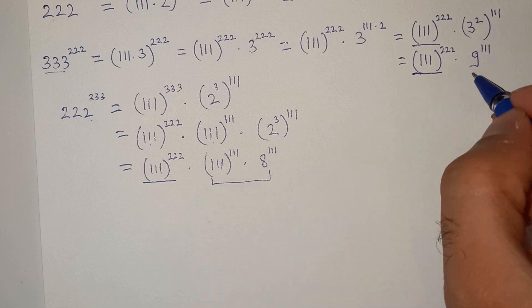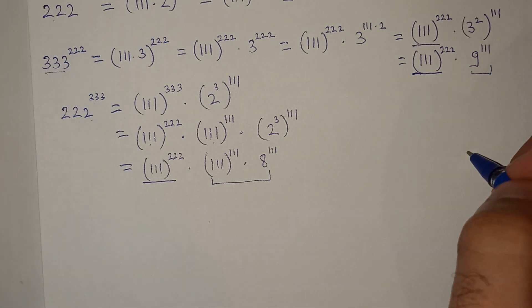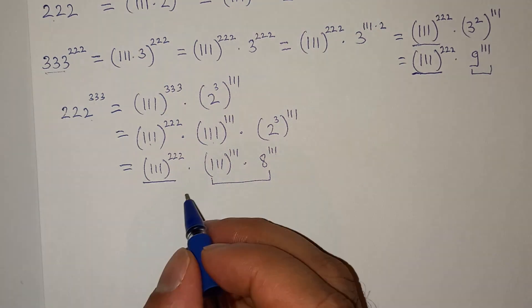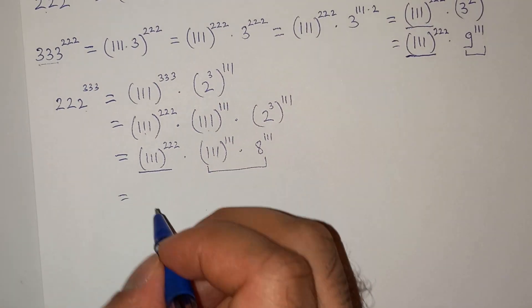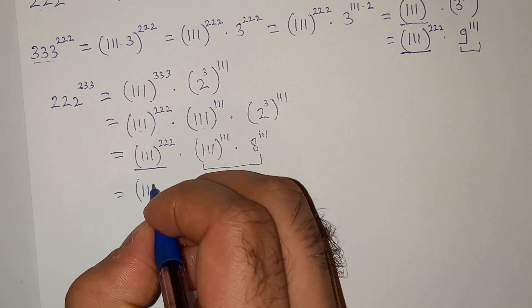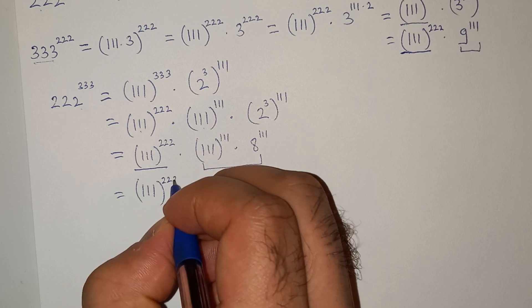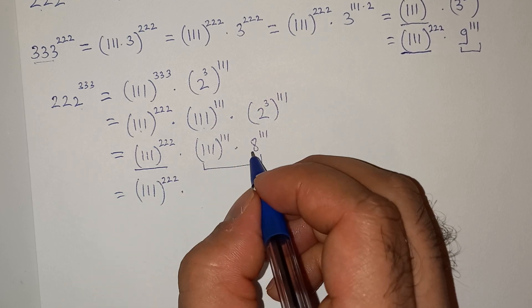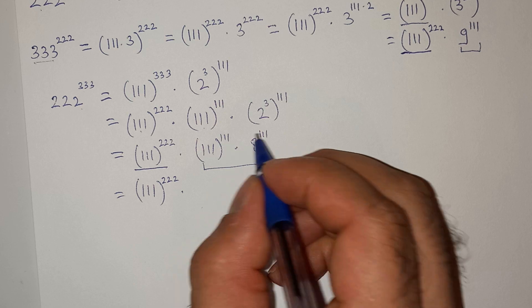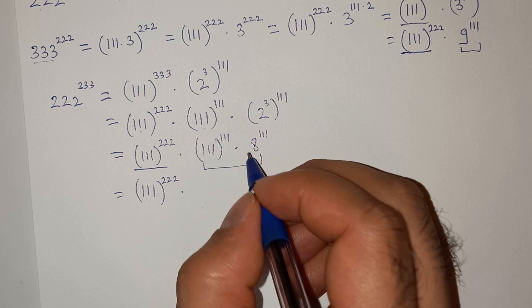So what we can do is we can write this as triple 1 power triple 2 multiplied — now the exponents are same and the bases are different.